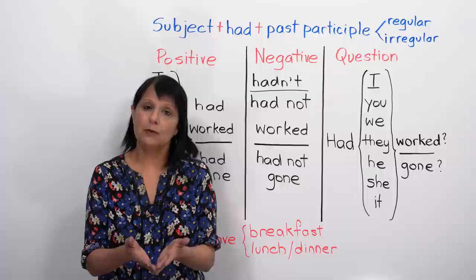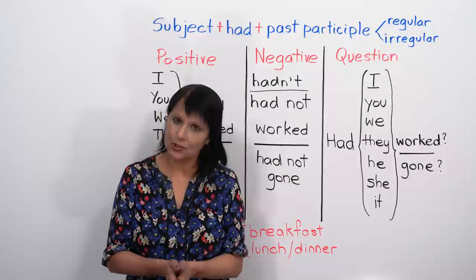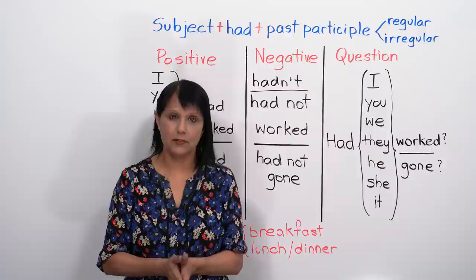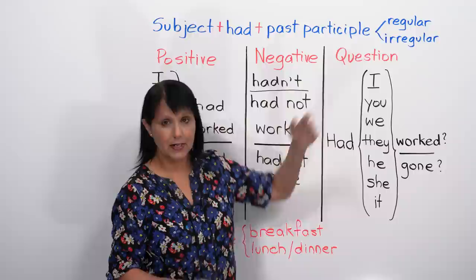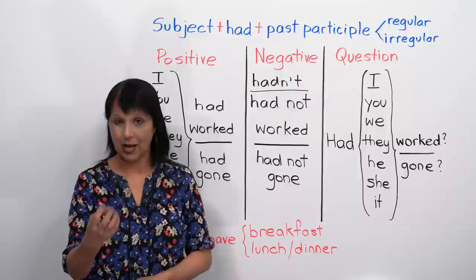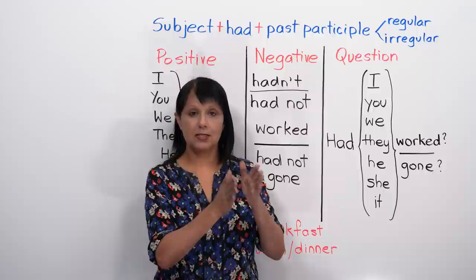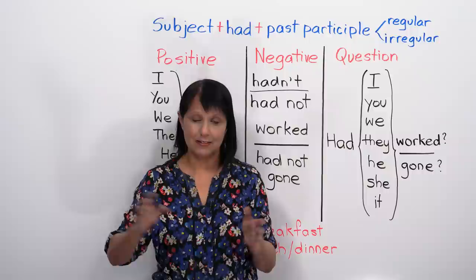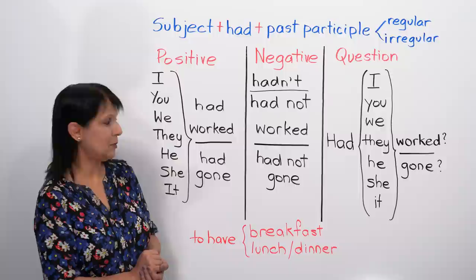Any good grammar book will have a list of irregular verbs, or you can look them up online. Examples of the past participle of irregular verbs: the verb to go — base form go, past tense went, and the third form, which we need here, is gone. Go, went, gone. See, saw, seen. Do, did, done. You need to learn that third form, but once you know it, it's easy to use this tense.